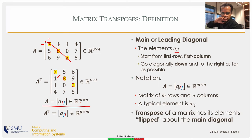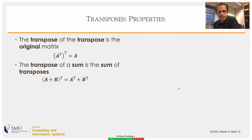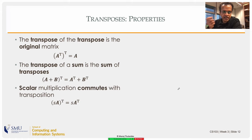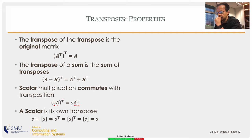Let's look at some properties of transposes. First: A transpose transpose equals A, because you're flipping it once and then flipping again, getting the original back. The transpose of a sum of two matrices is the sum of their transposes. Scalar multiplication and transposition can be commuted — you can scale first then transpose, or transpose first then scale.